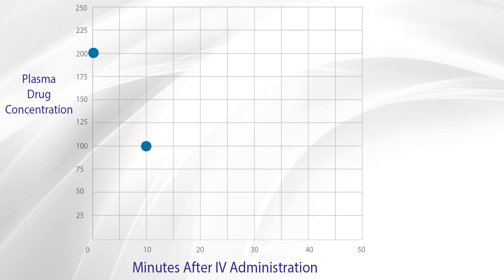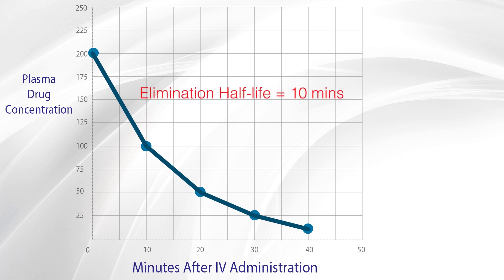In another 10 minutes, it drops by half again to 50 micrograms per milliliter, and another 10 minutes later, it has dropped to 25 micrograms per milliliter and to 12 micrograms per milliliter after another 10 minutes. We now know that the elimination half-life of this particular drug is 10 minutes.